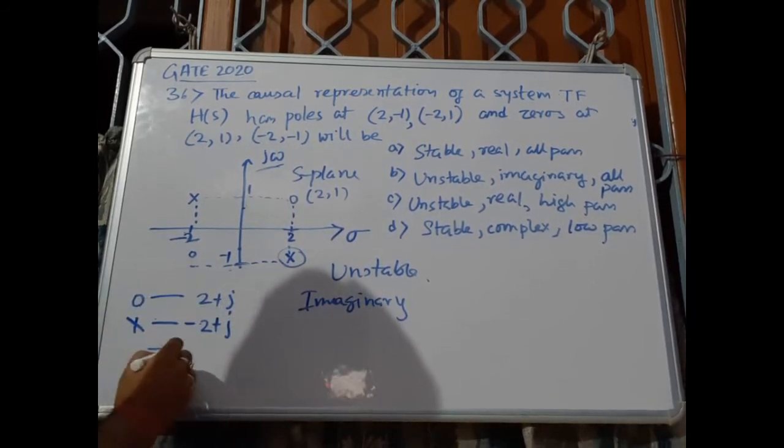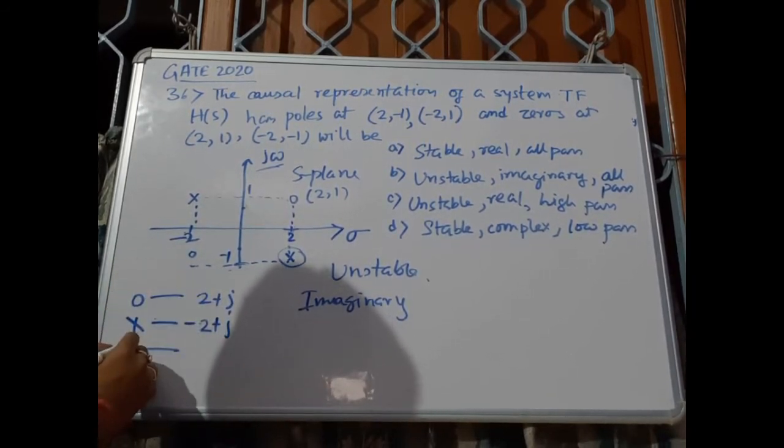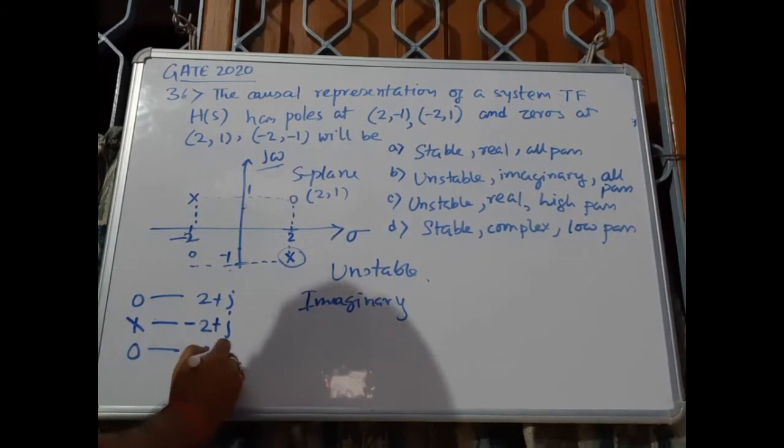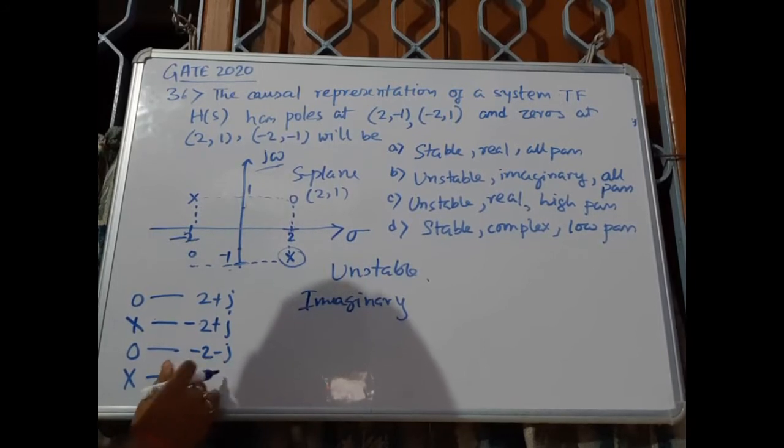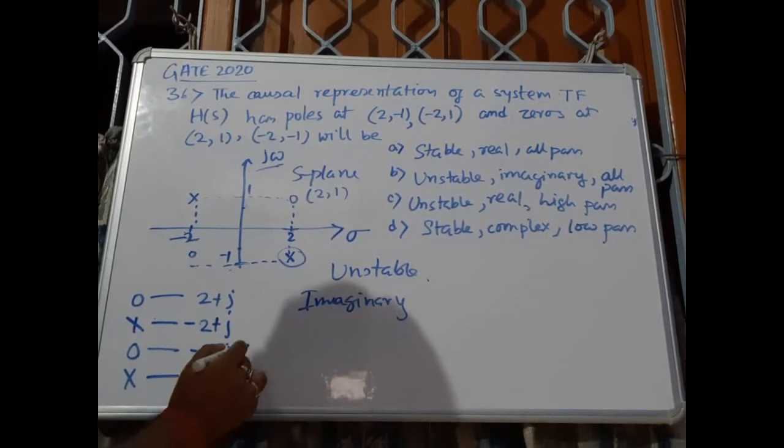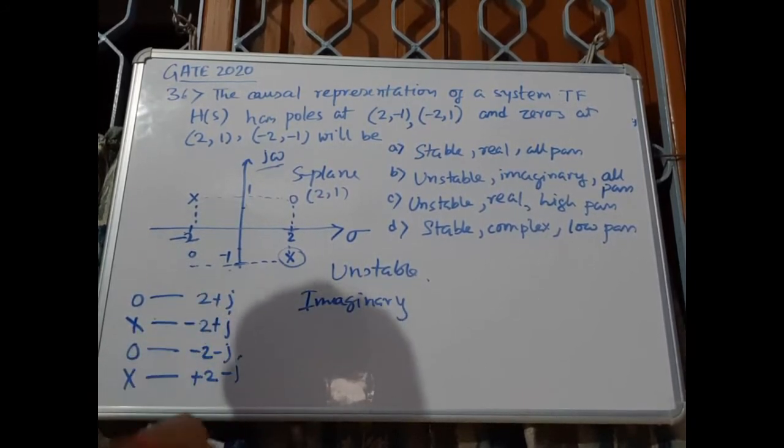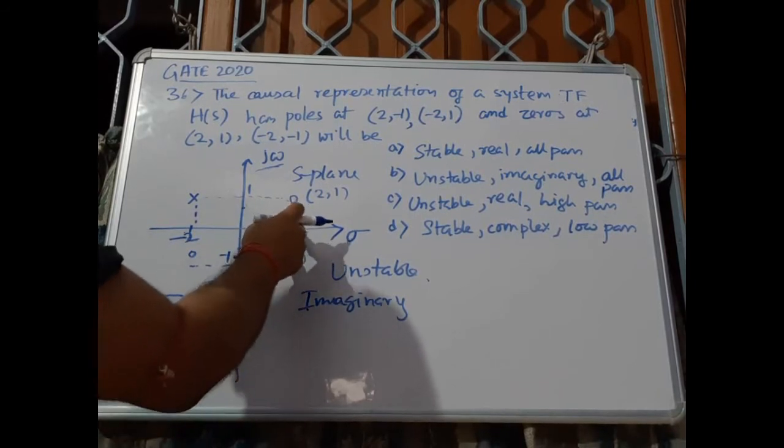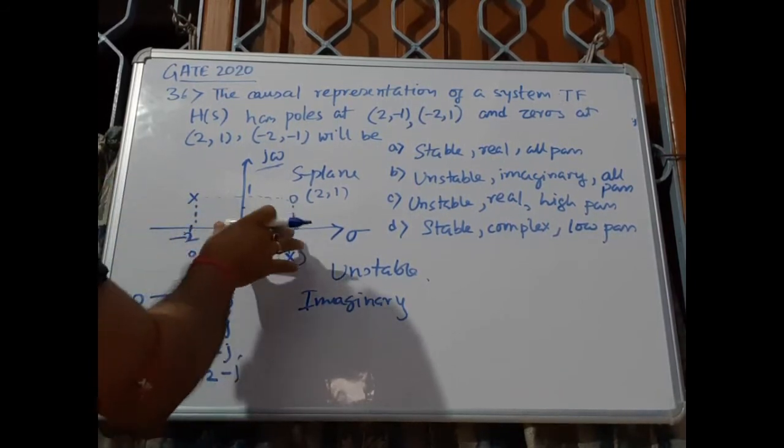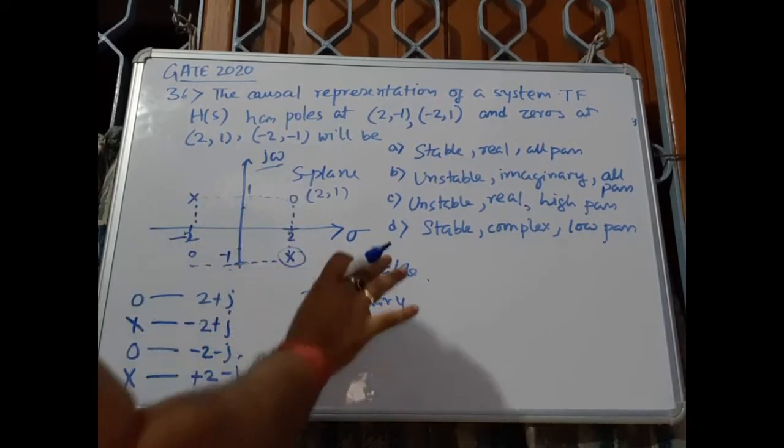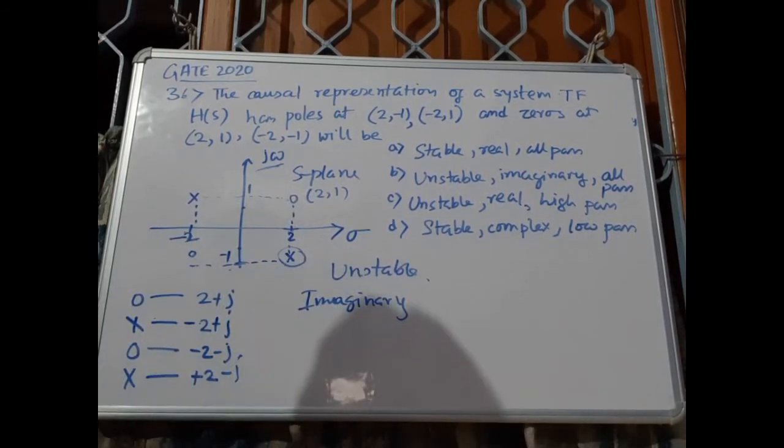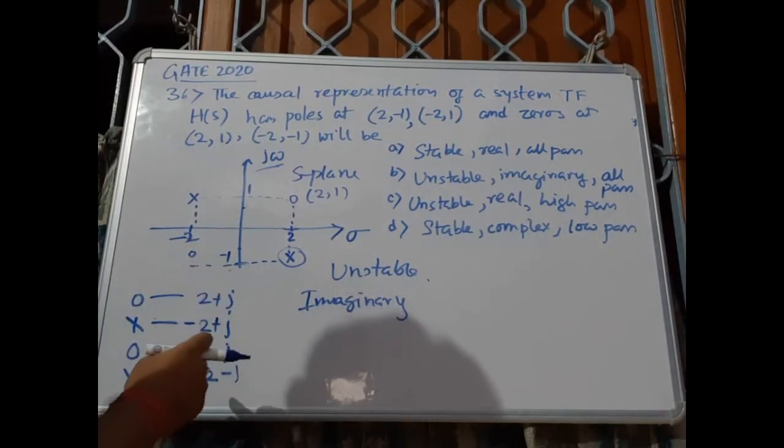Here we have another zero at -2-j and a pole at 2-j. This is imaginary because if all the poles are in the real axis then it can be called real, but it has imaginary components with it, so it must be imaginary.